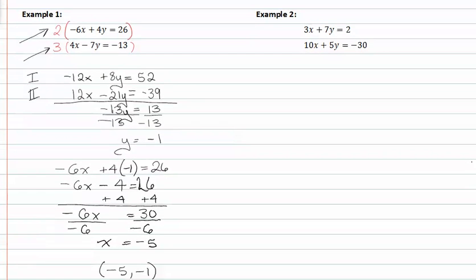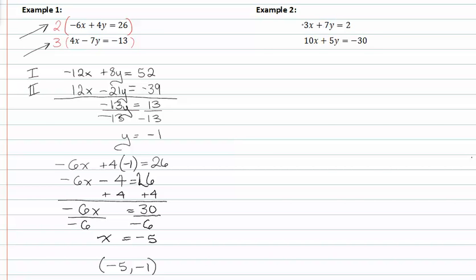In example two, we need to look at both of the equations and determine what we need to multiply each equation by. We see that if we multiply the first one by ten and the second one by negative three, we can distribute those and drop our x terms out.